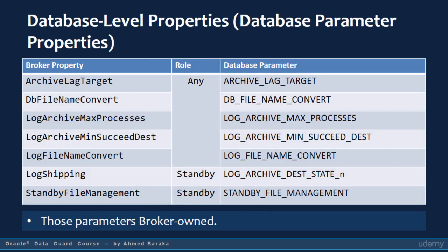Those are database-level properties and they are of the database parameter category, which means those properties actually modify some database parameters. As long as the broker is enabled, those parameters should always be changed only by the DGMGRL utility. Do not use the ALTER SYSTEM command to modify them.